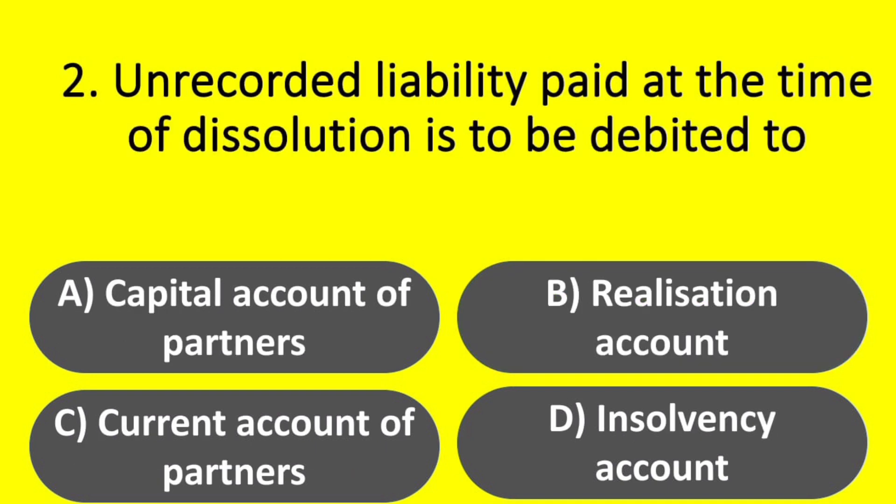Question. Unrecorded liability paid at the time of dissolution is to be debited to: Option A – Capital account of partners. Option B – Realization account. Option C – Current account of partners. Option D – Insolvency account. Answer: Option B – Realization account.